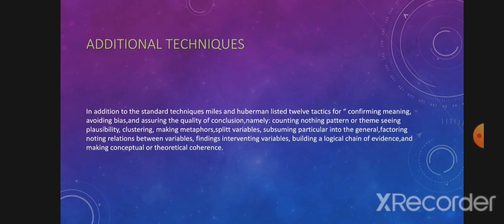Additional Techniques. In addition to standard techniques, Miles and Huberman listed 12 tactics for confirming meaning, avoiding bias, and assuring the quality of conclusions, namely: counting, noting patterns or themes, seeing plausibility, clustering, making metaphors with variables, subsuming particulars into the general, factoring, noting relations between variables, finding intervening variables, building a logical chain of evidence, and making conceptual or theoretical coherence.